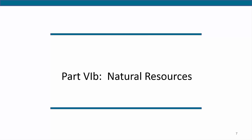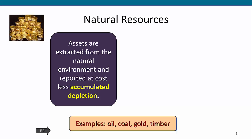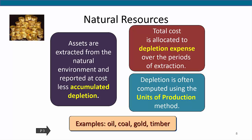Natural resources are another type of long-lived asset that companies must account for throughout their life cycles. Natural resources are assets that are extracted from the natural environment and include standing timber, mineral deposits, coal, oil, and gas fields. The total cost of a natural resource includes exploration and development costs. Natural resources are reported on the balance sheet at cost less accumulated depletion. Depletion is similar in concept to depreciation — it is the process of allocating a natural resource's cost to the period of its extraction. The depletion expense per period is usually based on units extracted from cutting, mining, or pumping. Accordingly, the units of production method is the most common form of computing depletion.